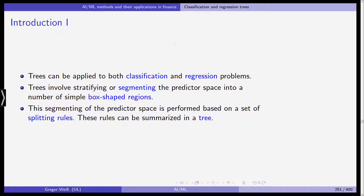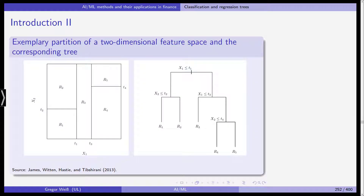This is what a tree looks like on the right-hand side, and it corresponds to the segmentation on the left-hand side. You can see we have two predictors, x1 and x2, and we are segmenting the predictor space into 5 boxes.